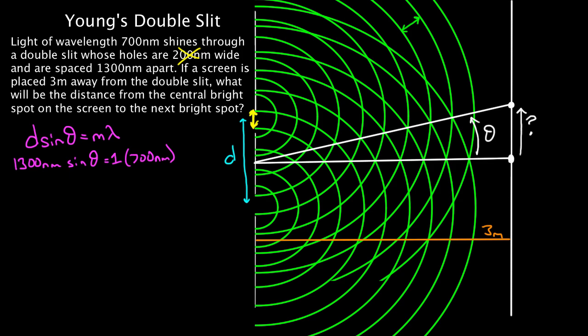Alright, so we calculate the angle. Here we go. So I'm going to find sine of theta, and I'll get the sine of theta equals, one is just one, so I divide both sides by 1,300. I get 700 over 1,300. The nanometers cancels nanometers. As long as I'm in the same units, it doesn't matter.